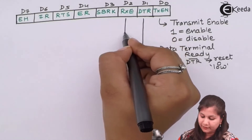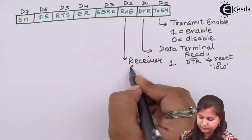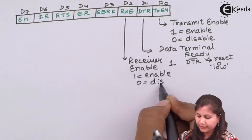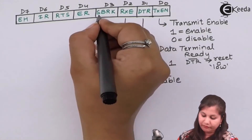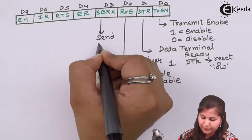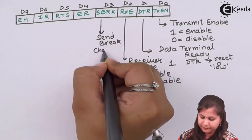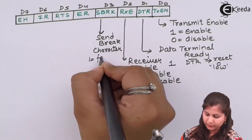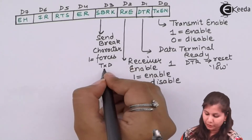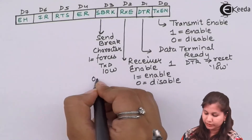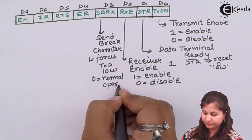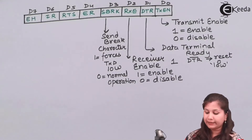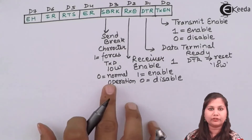Next we have RXE which is the Receiver Enable. If it is 1 then the receiver will be enabled; if it is 0 then receiver will be disabled. Then we have SBRK which is the Send Break Character. If this bit is 1, it is going to force the transmit data pin to be low. When it is 0, normal operation of the 8251 will be performed. So when this bit is 1, the TXD pin of the 8251 will be made low and break characters are sent.